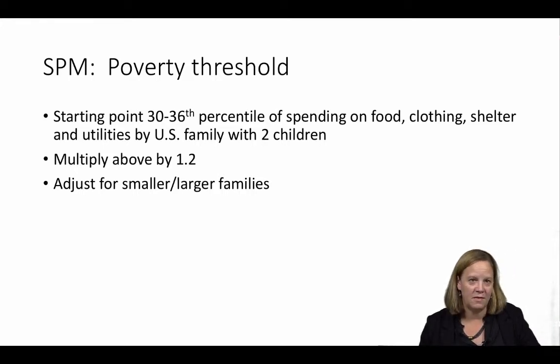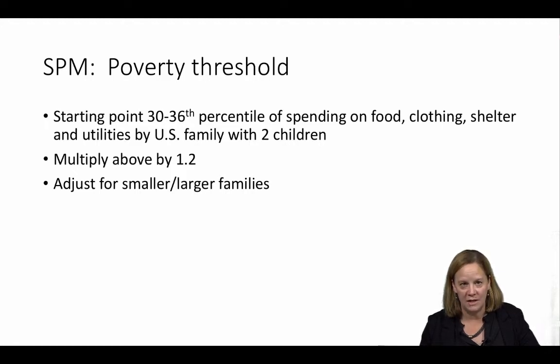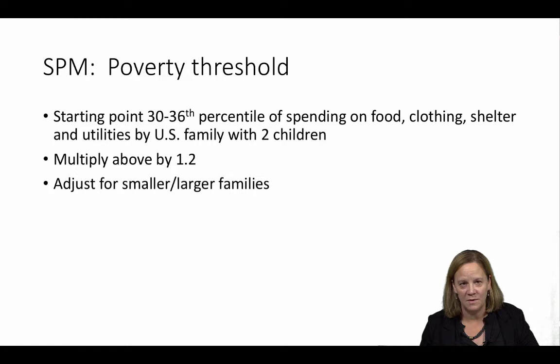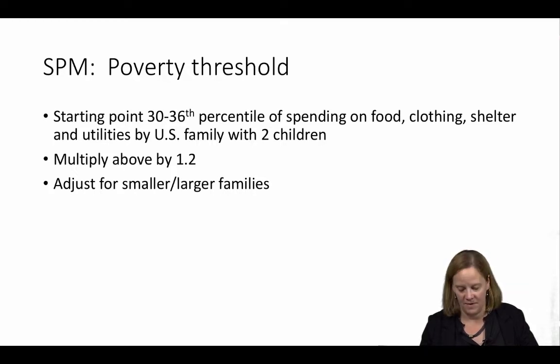This multiplier of 1.2 reflects the fact that there are other essentials beyond food, clothing, shelter, and utilities, such as household supplies and personal care items. That threshold is also adjusted to account for different family sizes.